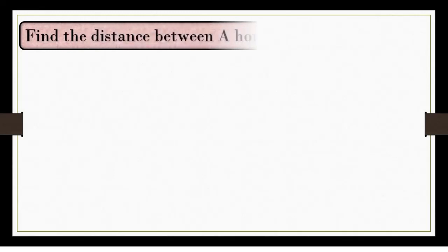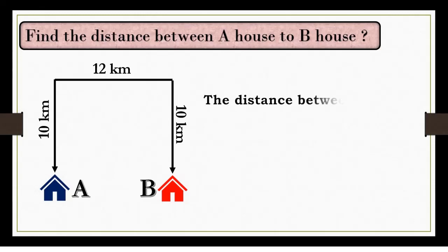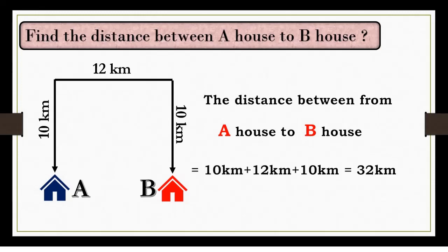Find the distance between A house to B house. The distance from A house to B house is 10 km plus 12 km plus 10 km. Total distance is 32 km.